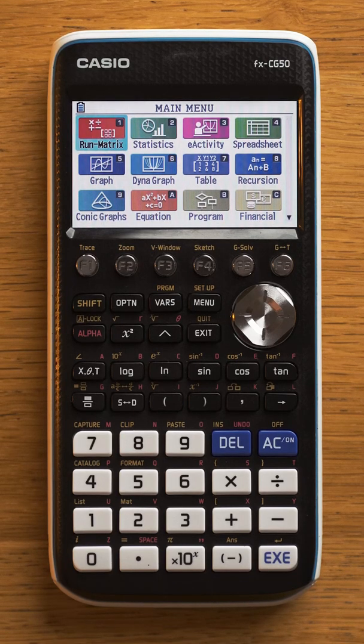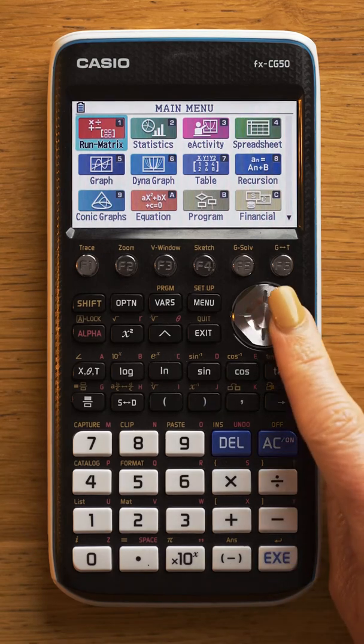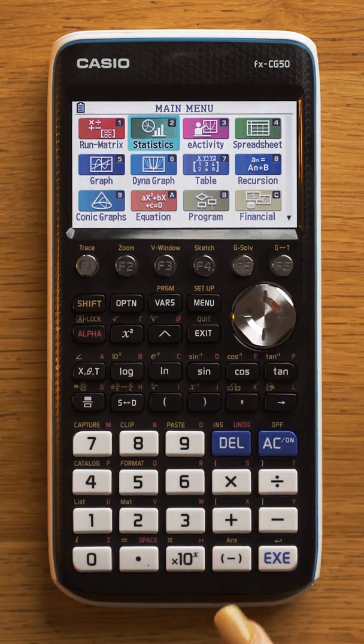If you've been given a probability and you're trying to work out the x value of a normal distribution, you're going to need the inverse normal.